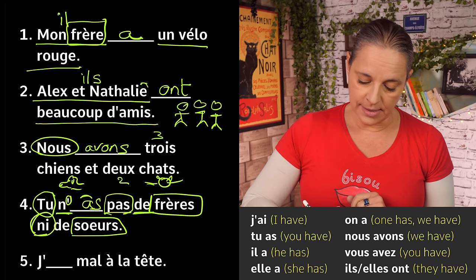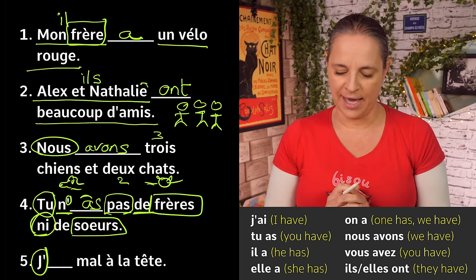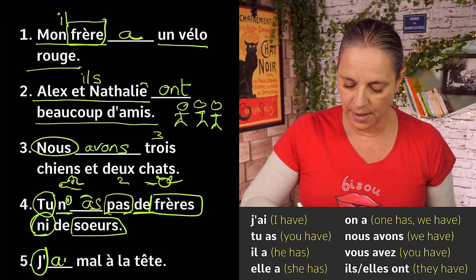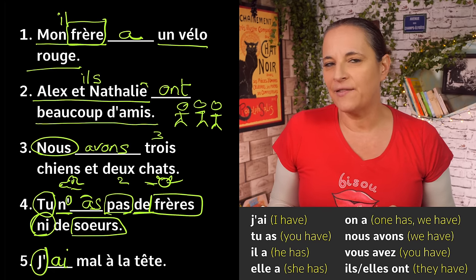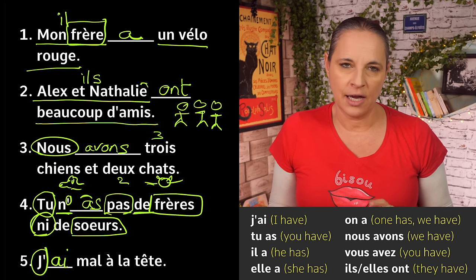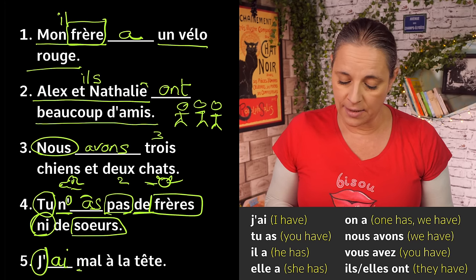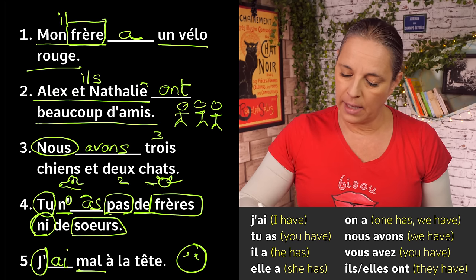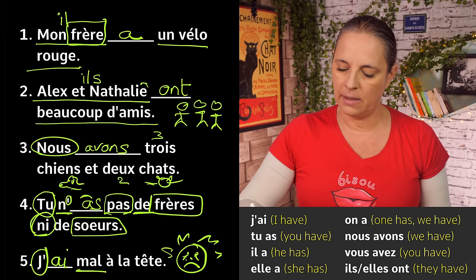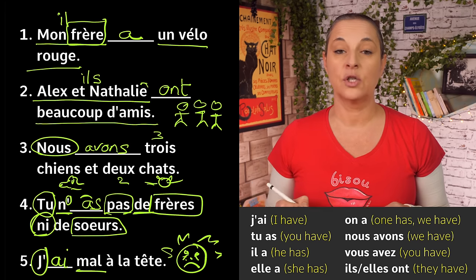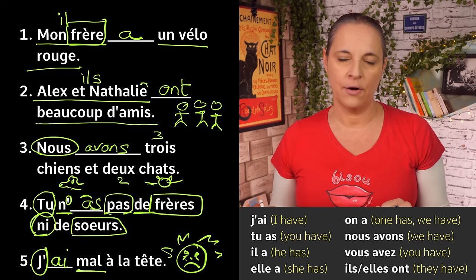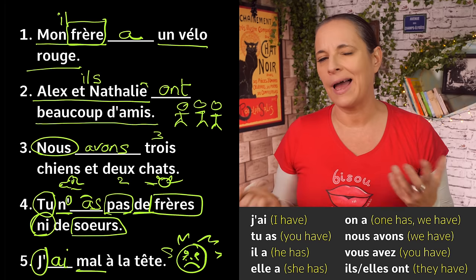The next one has an indicator too: j'ai — mal à la tête. When you talk about having a headache or a toothache, you always start with 'mal'. J'ai mal à la tête — I have a headache. J'ai mal à la dent, j'ai mal à la gorge, j'ai mal à la main, j'ai mal aux yeux, j'ai mal à la bouche — and so on.